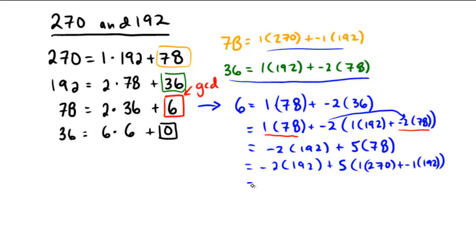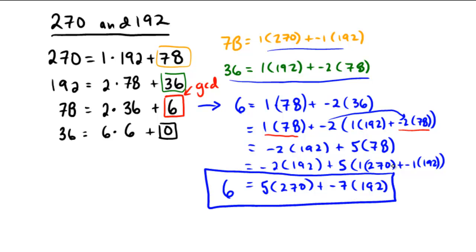Simplifying this out, looks like we have 5 copies of 270 to begin with, and then we have 5 times negative 1, which is negative 5, on top of the negative 2, would be plus negative 7 copies of the 192. And that's equal to 6. We've successfully written 6 as a linear combination of 270 and 192.